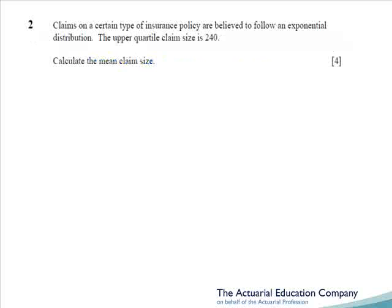Question 2 involves the method of percentiles from chapter 3 of the notes. We're told that claims follow an exponential distribution, and the upper quartile claim size is 240. So we would expect three quarters of the distribution to be below 240, i.e. the CDF of 240 equals three quarters. A little rearranging will obtain your exponential lambda, and then you can calculate your mean claim size. Again, this should have been an easy four marks.